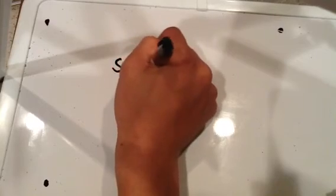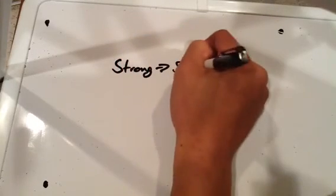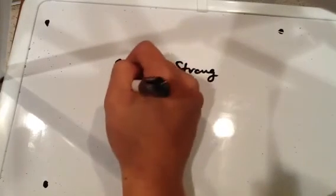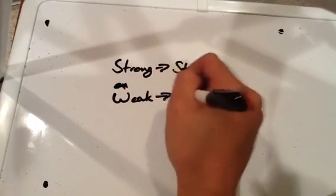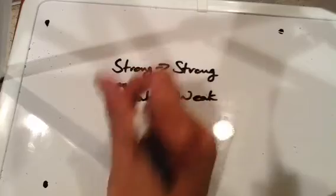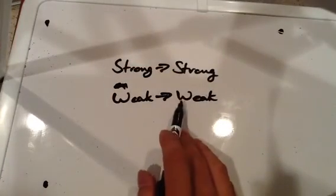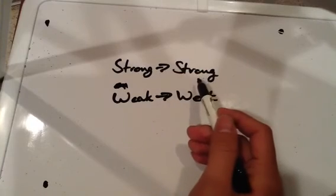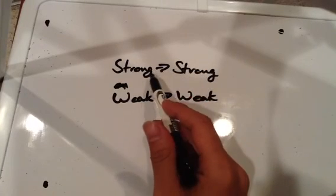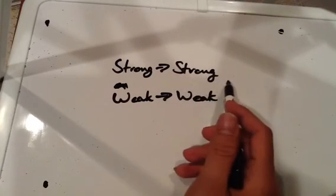You should basically be seeing a correlation here, which should be pretty simple. Strong is strong. I'm sure I don't need to write this, really, but weak is weak. So if I have a weak acid, it'll be a weak electrolyte. If I have a weak base, it'll be a weak electrolyte. If I have a strong acid, strong electrolyte. Likewise strong base, it's going to be a strong electrolyte.